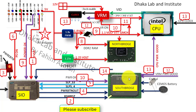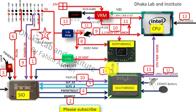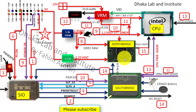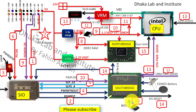The South Bridge will pass PLT reset to IO and also pass PLT reset to the North Bridge. This is a very important signal — if this signal is OK, then you can see that everything is fine. The North Bridge is fine, then the South Bridge will provide PCI reset, and then the North Bridge will also provide CPU reset to the CPU.